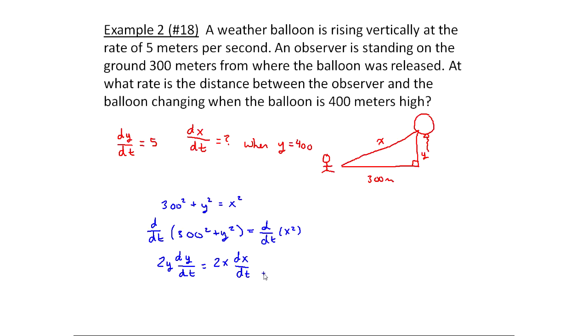So now I can start plugging information in, but wait a second. We have dy/dt, that's 5. We're trying to find dx/dt. We have Y is 400. We're missing X. Where can I get X from? Well if I go back here, when Y is 400, what is X? I need to know what X is then, because then I can plug it in down here. This is a piece of information we didn't need to worry about last time.